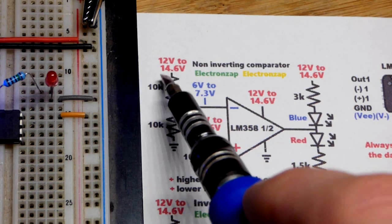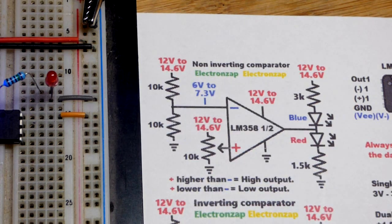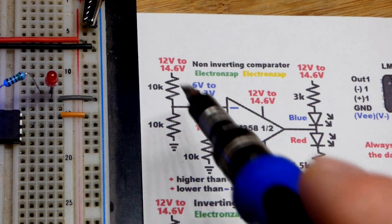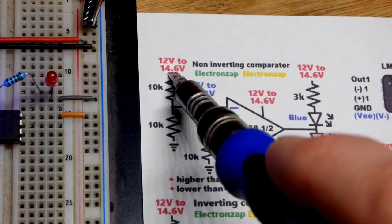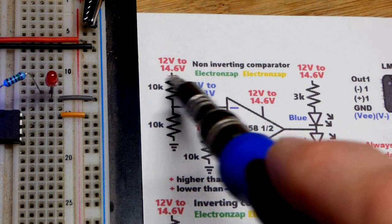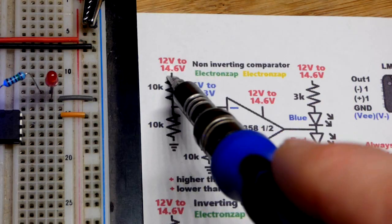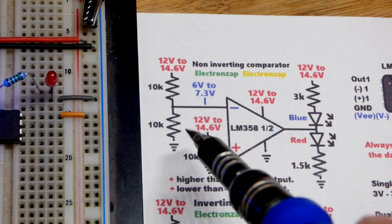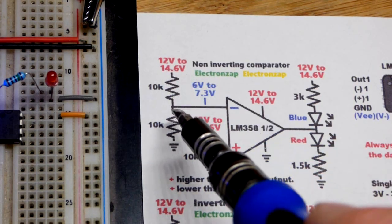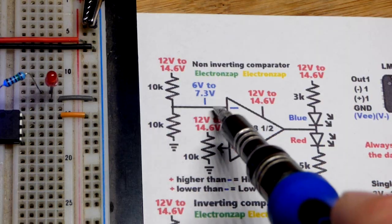When you apply a charger you can get up to 14.6 volts with the chargers, and then when you remove the charger it's going to go right to about 13.6. That's fully charged, but giving it a higher voltage than its fully charged voltage packs some more stored energy into it.